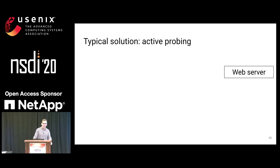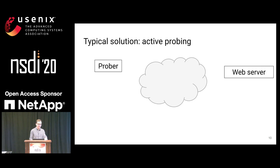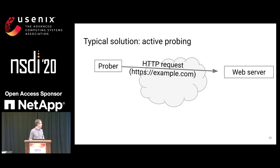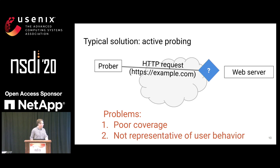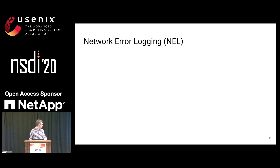The typical solution is to use a prober — you have a prober that sits out somewhere on the internet and sends requests to your service on a schedule. Then you look and see: did those requests work? If not, you fire an alert. But there are problems with this. These probers typically have poor coverage — you're not able to get them in every autonomous system you'd want. And they may not be representative of the behavior of your users; they're not going to hit every single URL your users are hitting. This is where network error logging, or NEL, comes in.